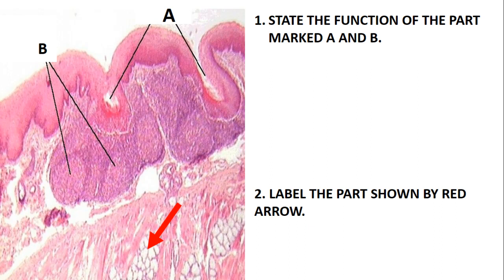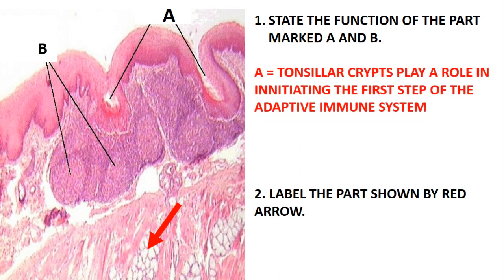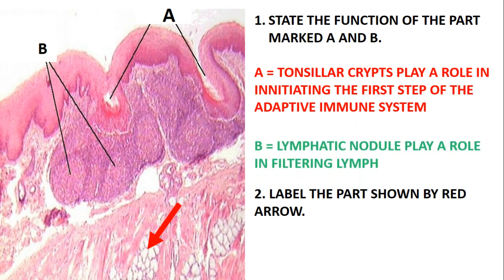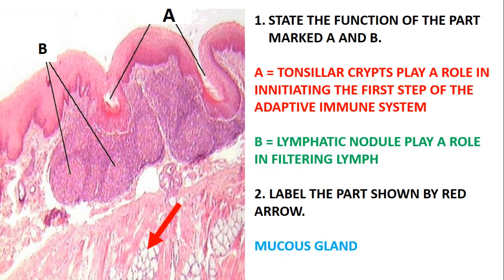State the function of the parts marked A and B. This slide could be the tonsil. Part A is just the tonsillar crypts, which play a role in initiating the first step of the adaptive immune system. We need to understand that we have the innate immune system and the adaptive immune system. Part B is the lymphatic nodules, which play a role in filtering lymph.